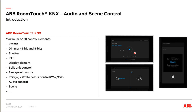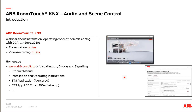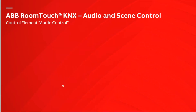On the right side you can see a control element for audio. I will explain more about scenes — how to select and trigger them. More information is available on our training database, where we have given webinars and online learning sessions about the RoomTouch. More information about the products can be found at abb.com/KNX under the submenu Visualization, including the product manual, the KNX product file, and the free ETS app necessary for commissioning.